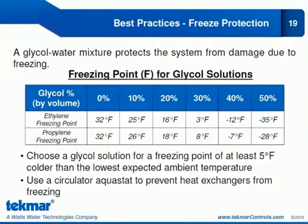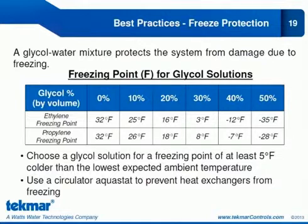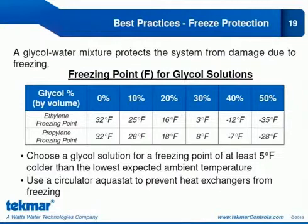Another best practice is freeze protection. Snow melt systems typically operate at very low temperatures, so a glycol-water mixture is essential to ensure the system does not experience damage from freezing. There are two glycol-water mixtures: ethylene and propylene. Propylene is the standard because it is non-toxic, unlike ethylene which is toxic. We recommend propylene, and you want to choose a solution that gives you a freezing point at least 5 degrees colder than the lowest expected ambient temperature — typically about 40% propylene. We also recommend using a circulator aquastat to prevent heat exchangers from freezing.